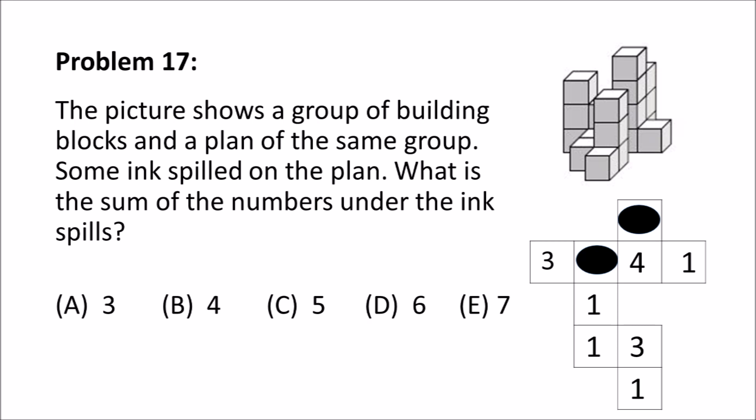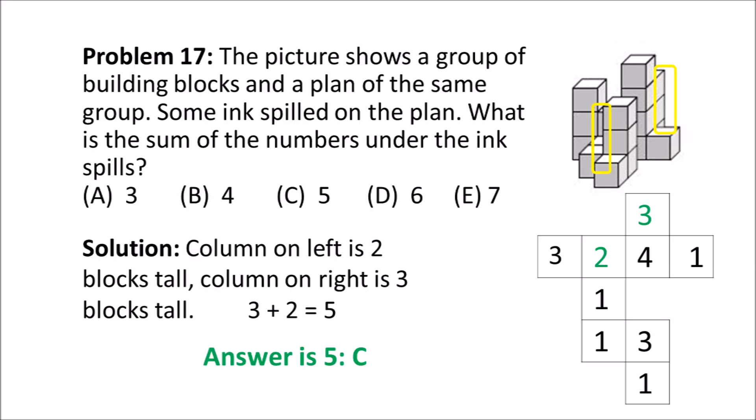Each number is represented by the number of cubes that is in the stack in the column. If you look, the 3 shows 3 cubes in the column, the 4 shows 4 cubes, and each of the ones show 1 cube. So if we look at the picture, there are yellow rectangles around the two that are missing. One has 2 in the column and the other has 3. So 2 plus 3 equals 5, which is answer C.